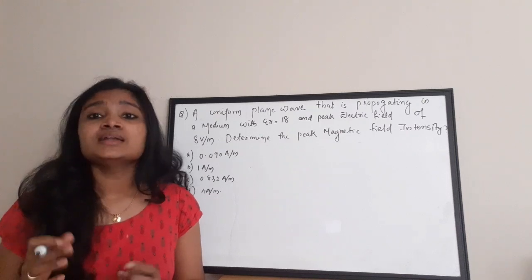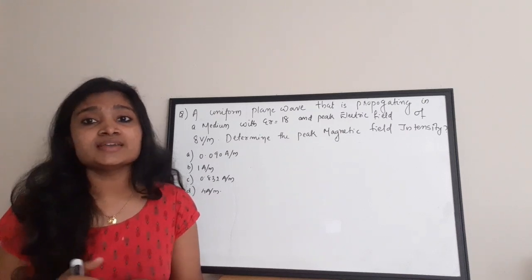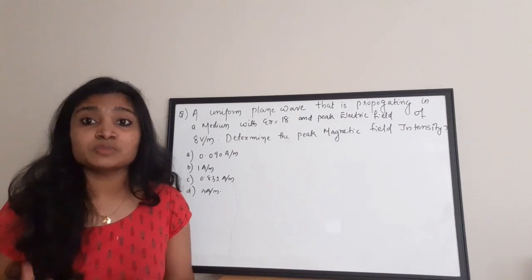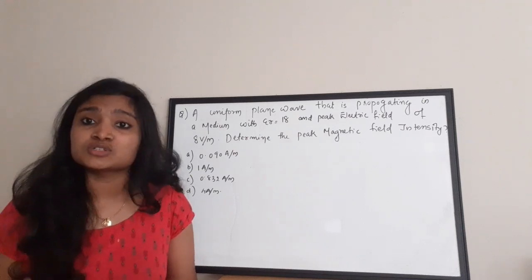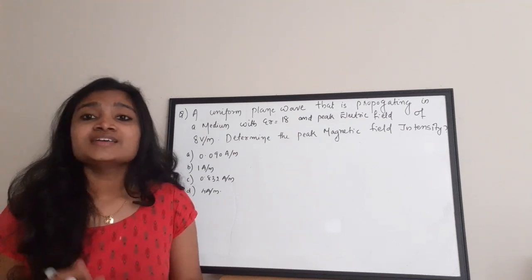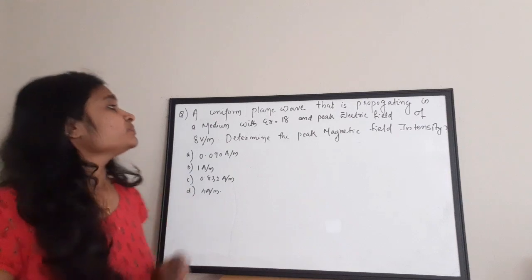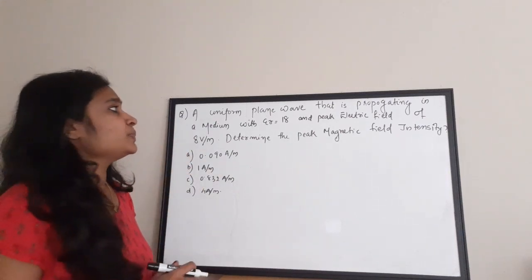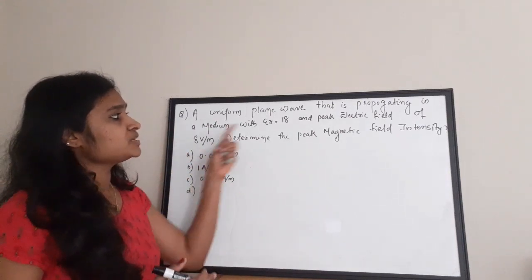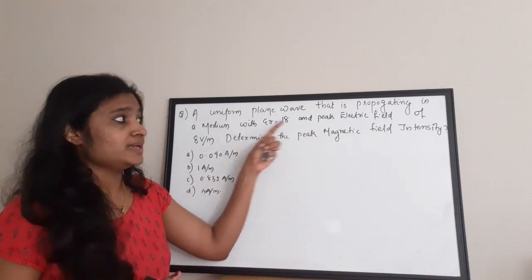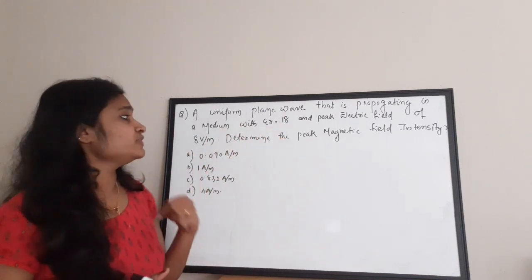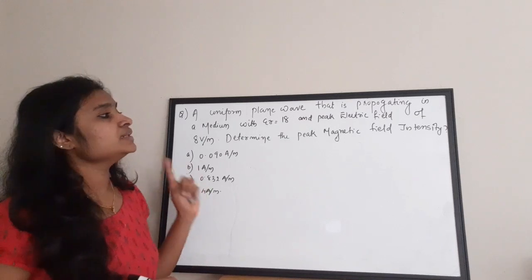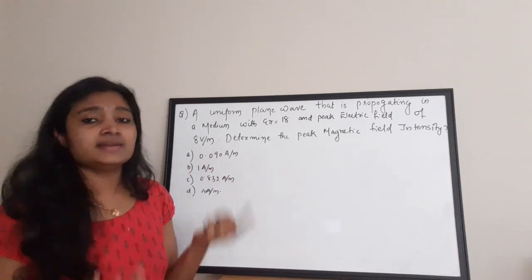Welcome to Easy Electronics. This is a video on ISRO scientist electronics preparation and we are going to see some questions from the electromagnetic theory subject. The first question: a uniform plane wave propagating in a medium with epsilon r equal to 18 and peak electric field of 8 volt per meter — determine the peak magnetic field intensity.